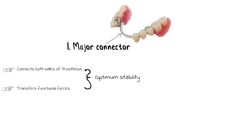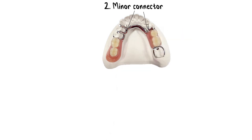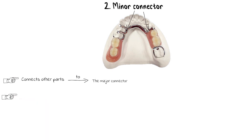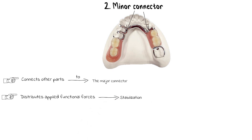There are many different types of major connectors that will be discussed in another video, but the basic principle remains the same. The next part is the minor connector. Minor connectors, like major connectors, connect different parts of the prosthesis, but their role is specifically to connect smaller parts like the clasp assembly, the indirect retainers, or the occlusal rests to the major connector. This also helps in distributing applied functional forces, stabilizing the prosthesis and transferring stress evenly across its different parts.